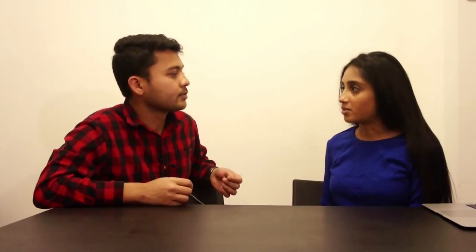She was put in an air cast, told she can bear weight as tolerated, and given pain medicine. Important to note: for Weber C, you want to immobilize with an AO splint or short leg cast rather than an air cast to protect stability, and refer to ortho as soon as possible.